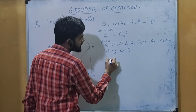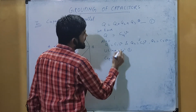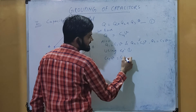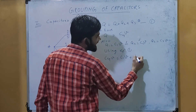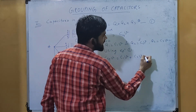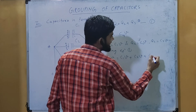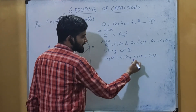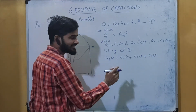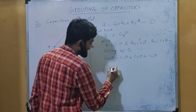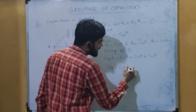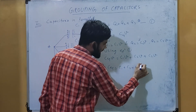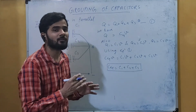Using the equation Q = Q1 + Q2 + Q3 and substituting: C_equivalent × V = C1·V + C2·V + C3·V. The potential V cancels from both sides, giving: C_equivalent = C1 + C2 + C3. This is the formula for the equivalent capacitance of capacitors connected in parallel.